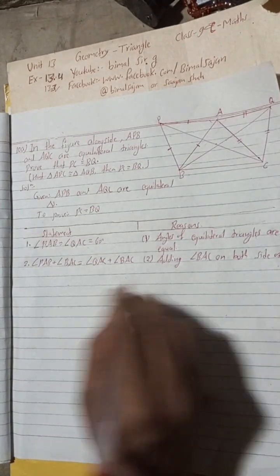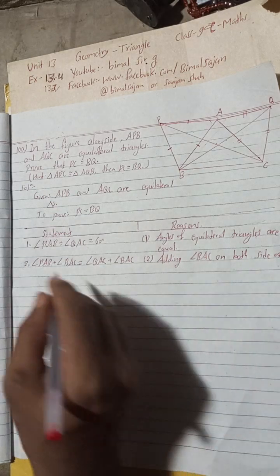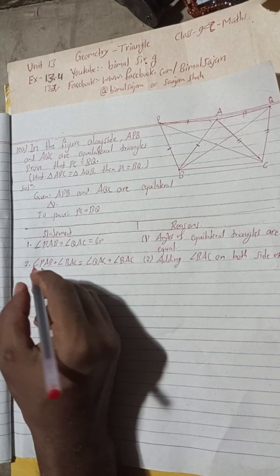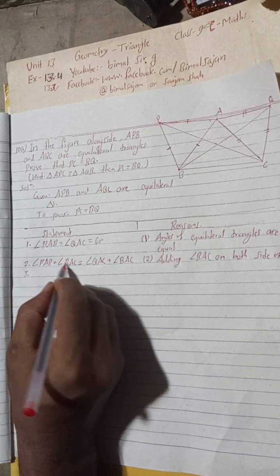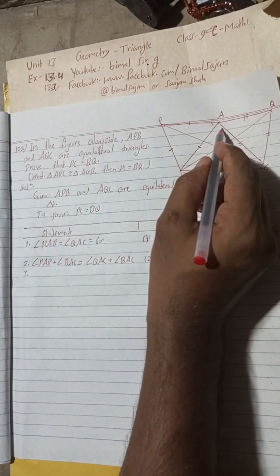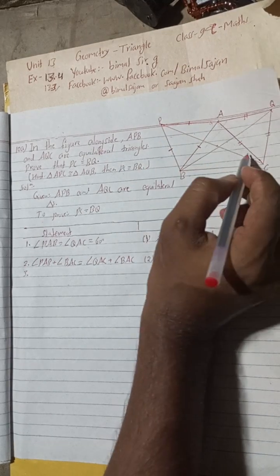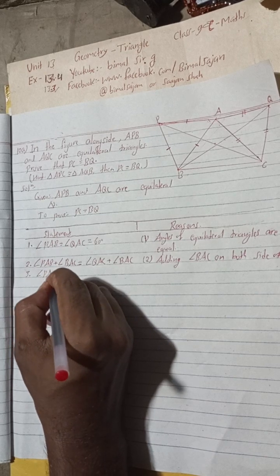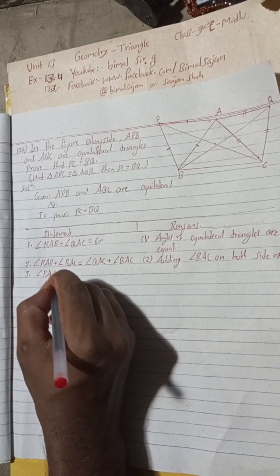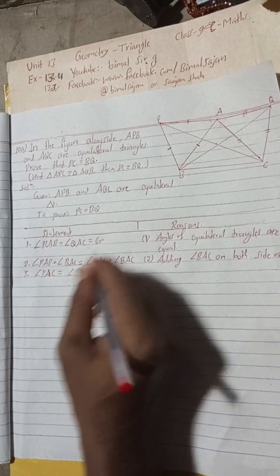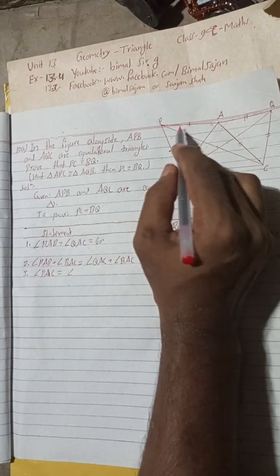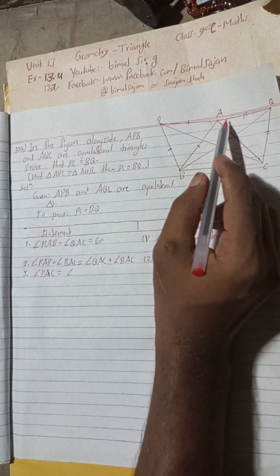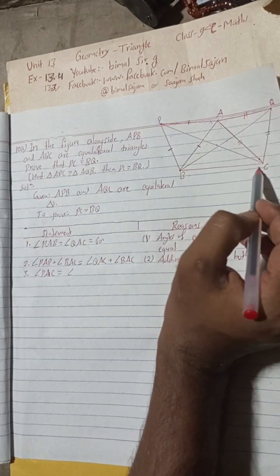My writing is not good, but you have to follow the audio. Number three: Both this angle plus this angle is named angle PAC. So angle PAC is equal to angle QAB. This angle plus this angle equals angle QAB.